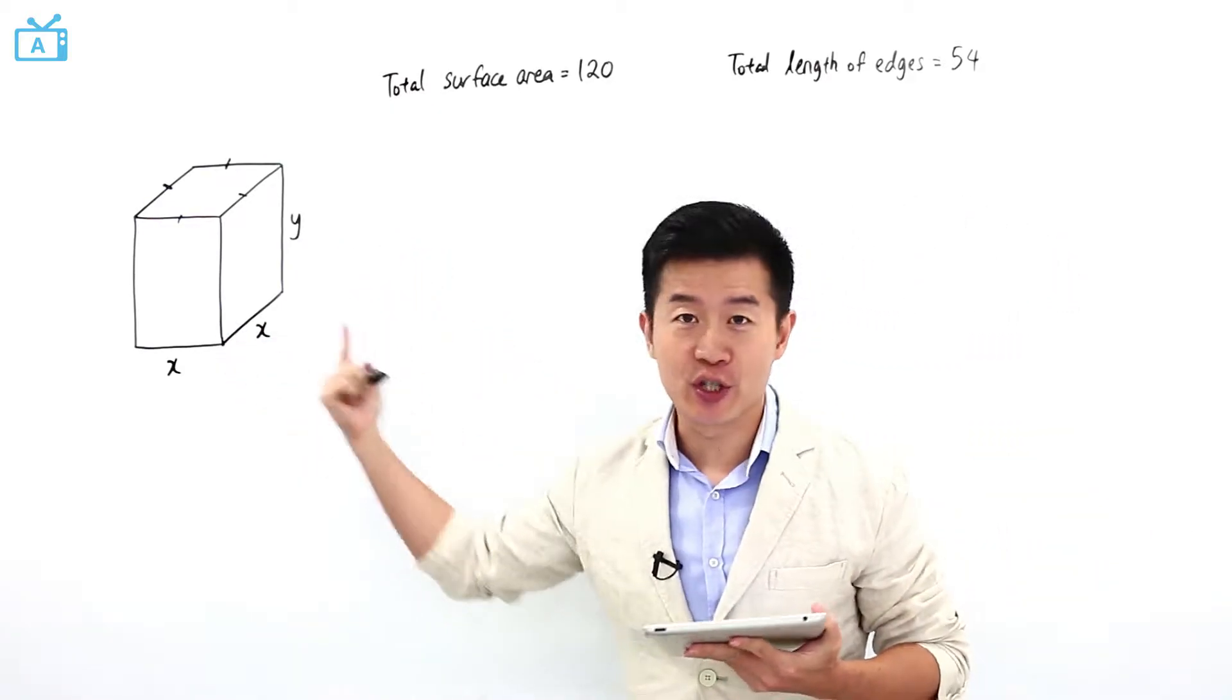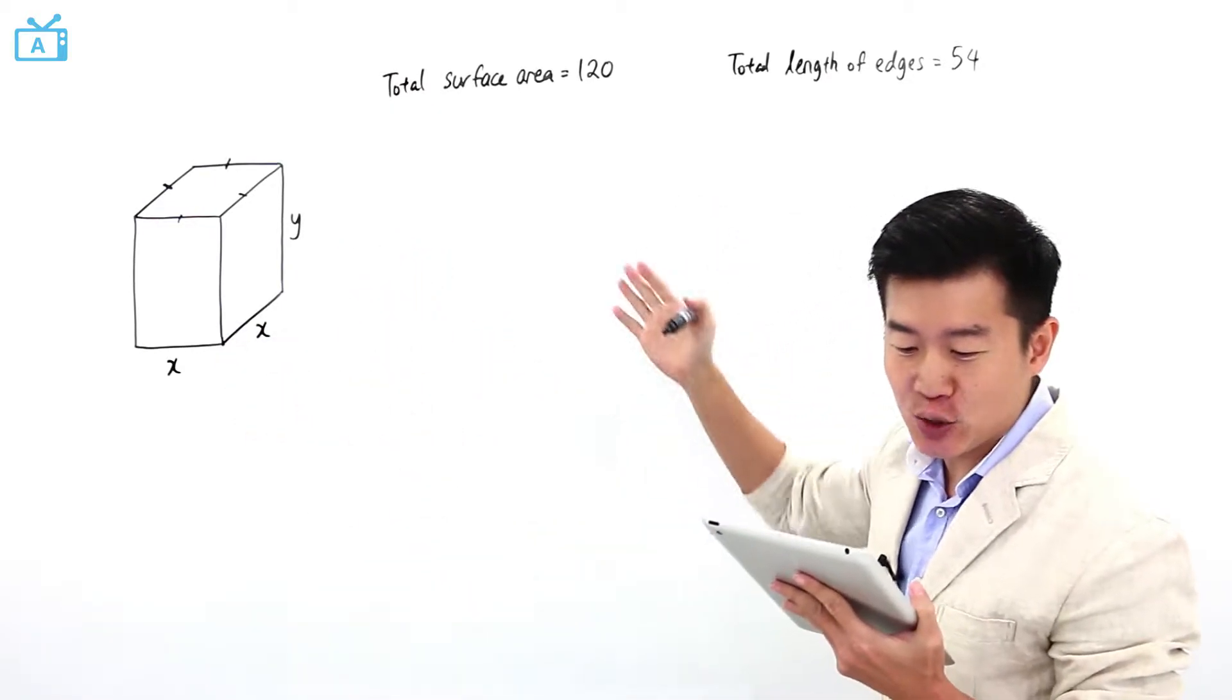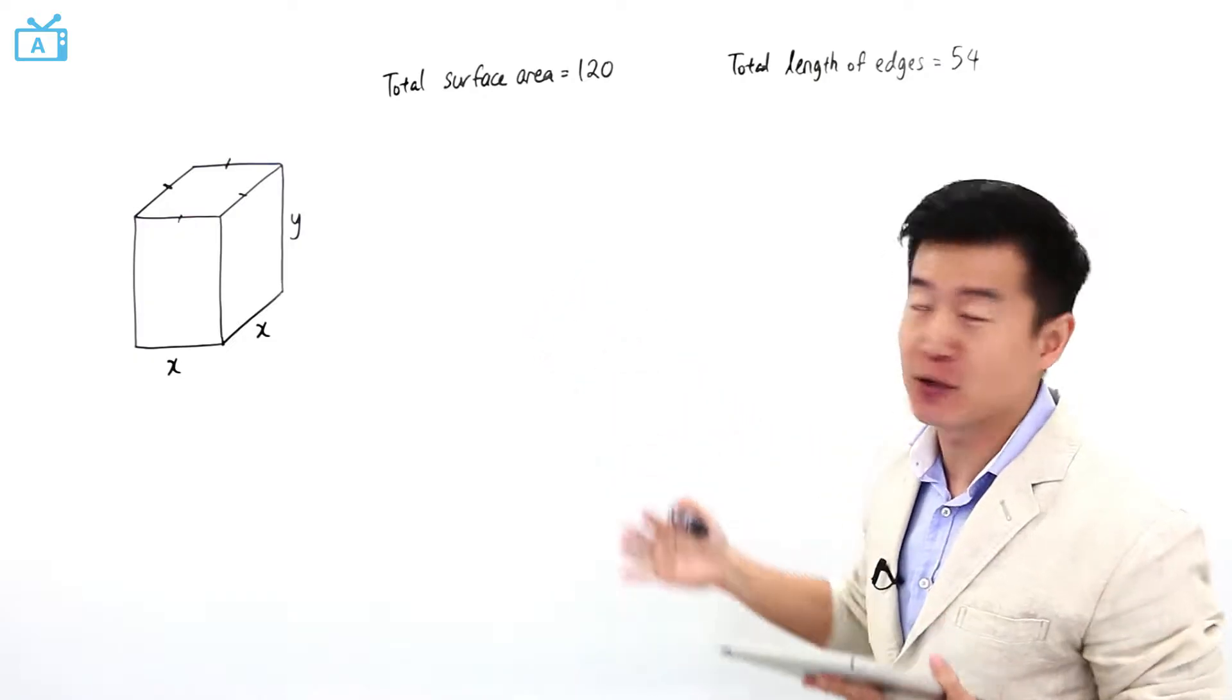We have a rectangular block with a square base. It is given to me that the total surface area of all the sides is 120.